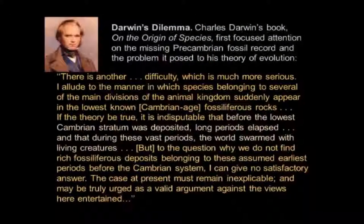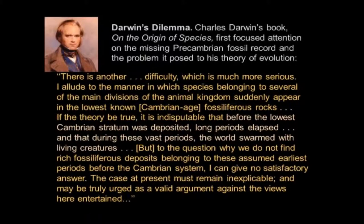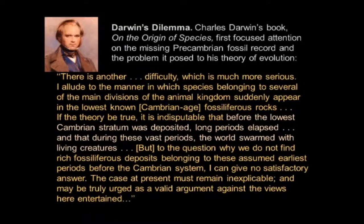It's always fun to start with Darwin's dilemma. All the plant and animal records that we know of occupy only the last one-eighth of Earth history or so. The first seven-eighths is a period where we really don't see macrofaunal evidence or floral evidence of plants and animals. Darwin alludes to this one difficulty with his theories — that all these organisms suddenly appear at the lowest known fossiliferous rocks, which were Cambrian age, 540 million years or so ago. Before that lowest Cambrian stratum was deposited, long periods elapsed, and during those vast periods the world swarmed with living creatures. For his theories to really apply, there had to be this earlier community of organisms.